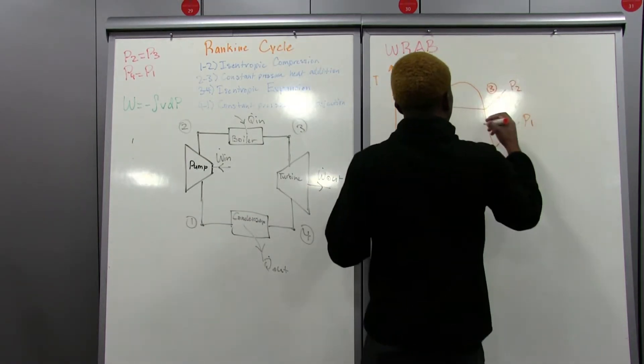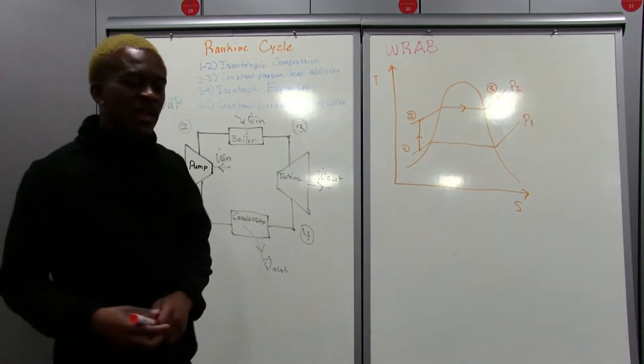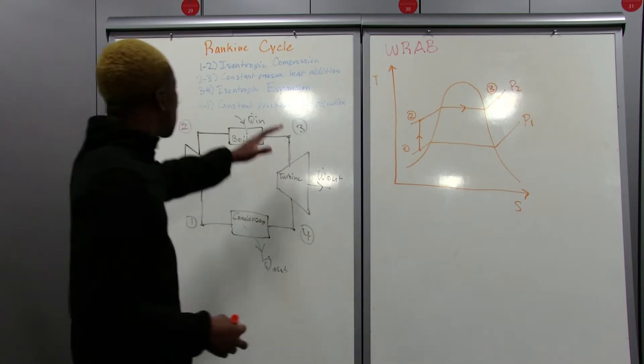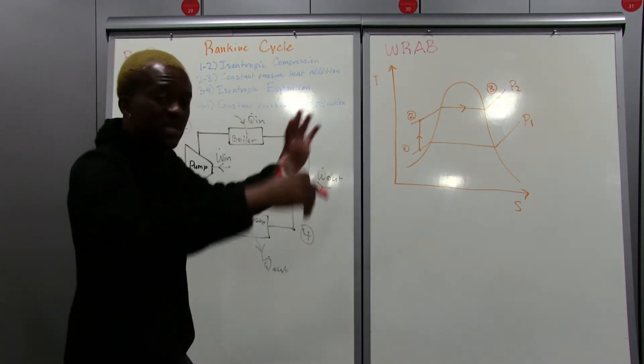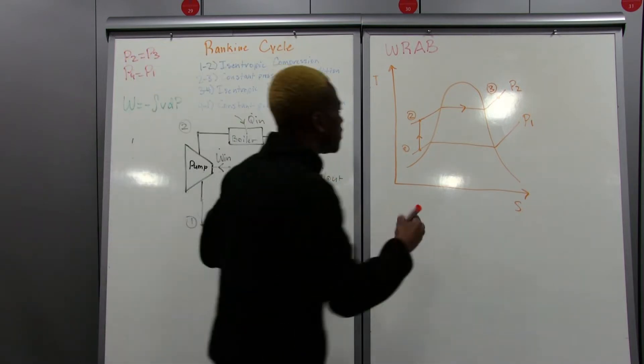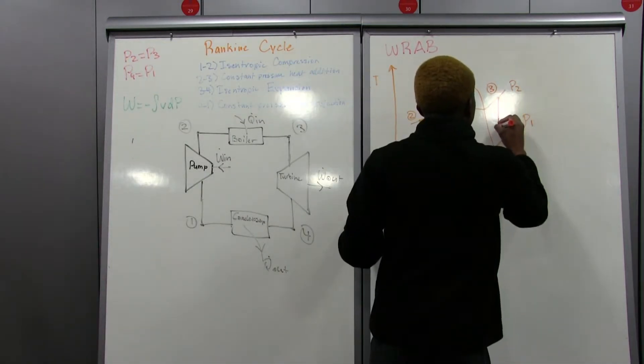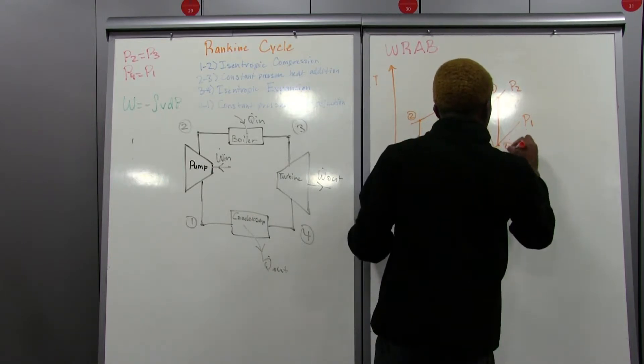That's going to be my state three. And I'm still drawing my arrows here. So, this is what we end up getting there. Next, since it's an isentropic expansion, that temperature ended up going down, and we had that same entropy. So, that's just a straight line down, and that's state four.